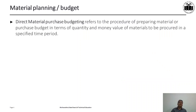Direct material purchase budgeting refers to the procedure for preparing a material or purchase budget. That budget is expressed in terms of quantity and also in terms of the money value of materials to be procured in a specified time period.